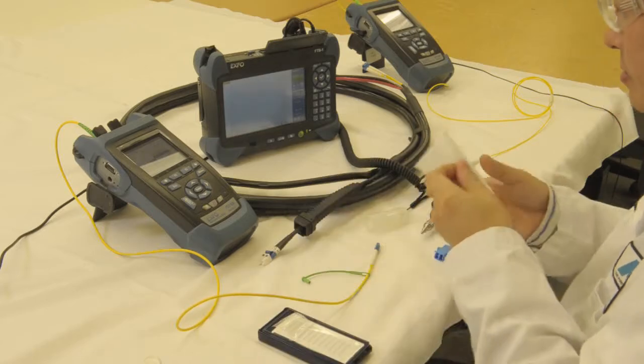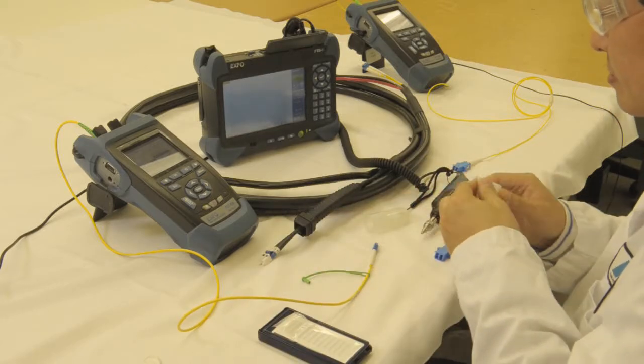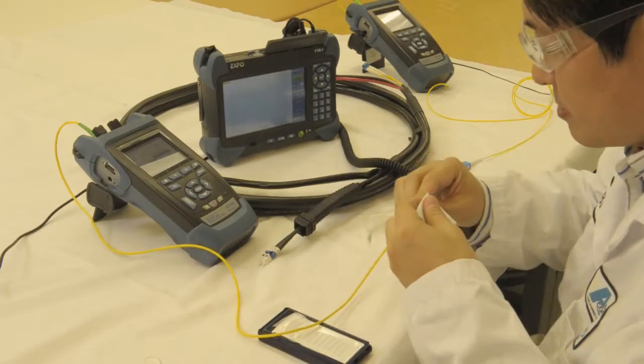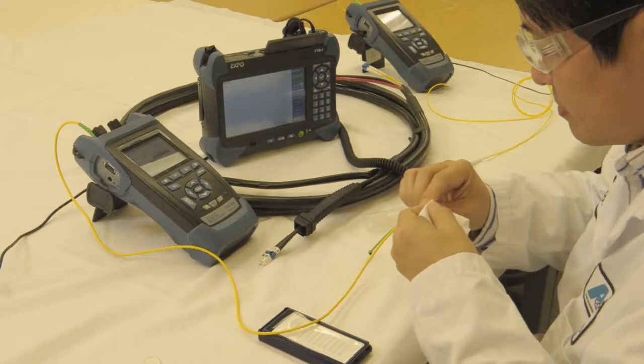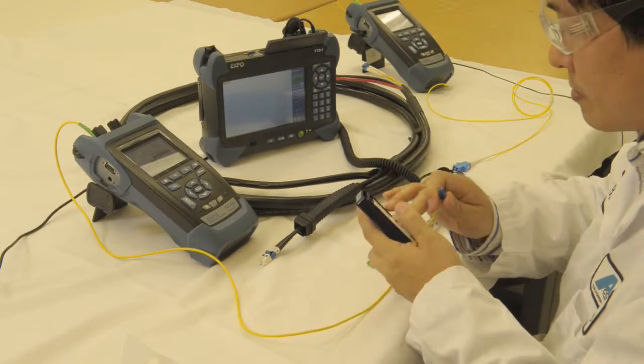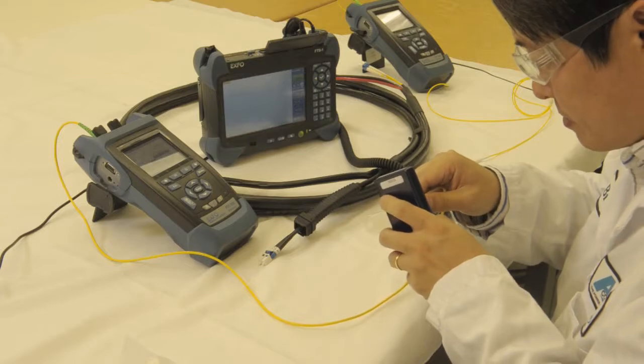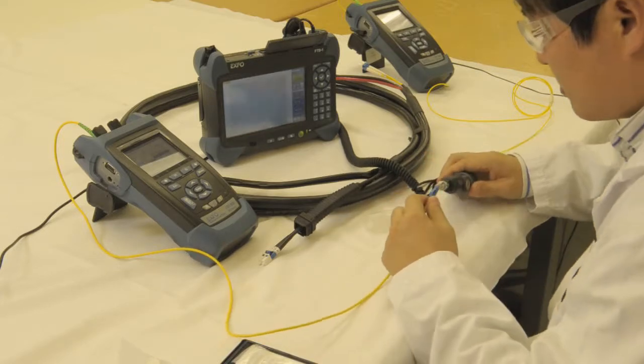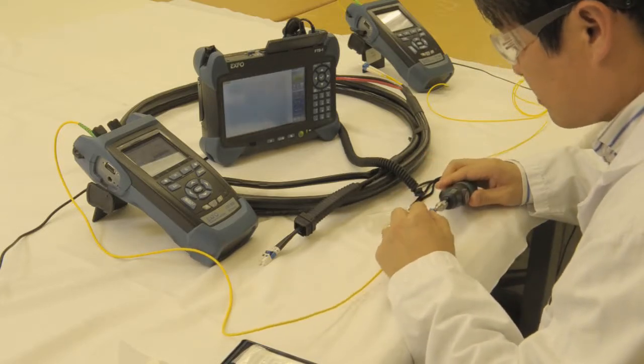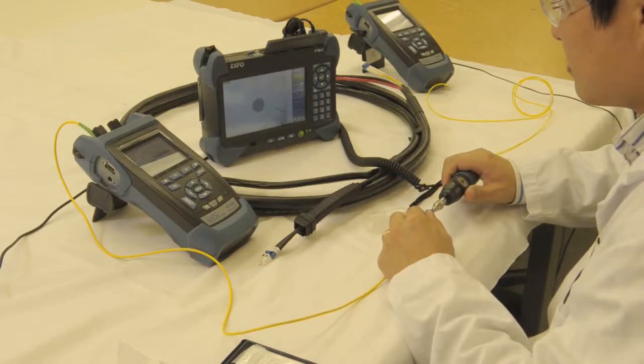Here we're using the solvent. I prefer the solvents over the alcohol as alcohol tends to leave a residue where the solvents don't, and then we're going to follow it up with the NTT cleaner. Check the fiber and that looks good.